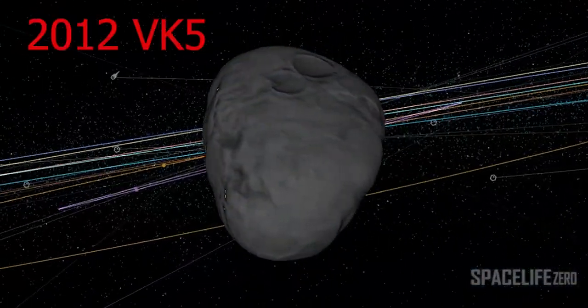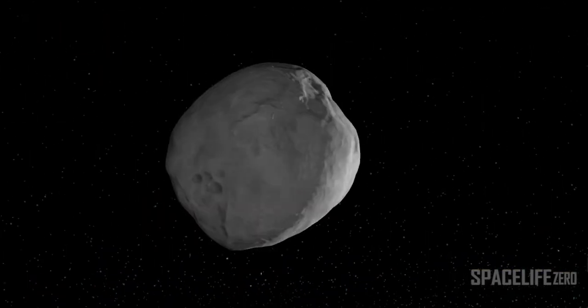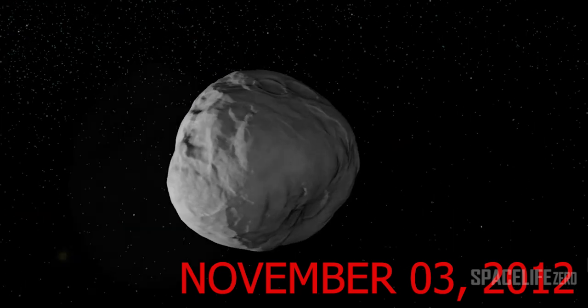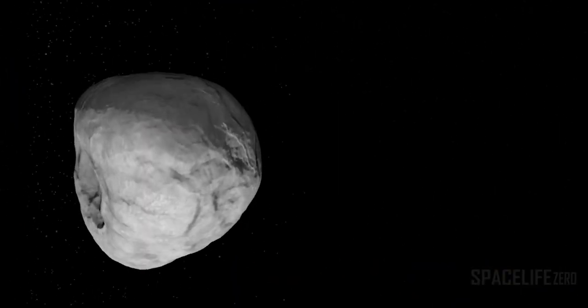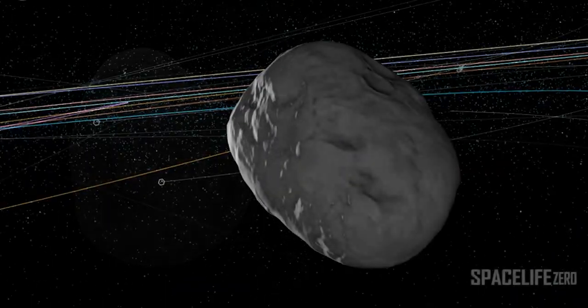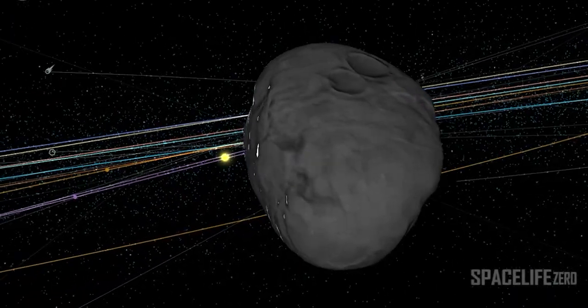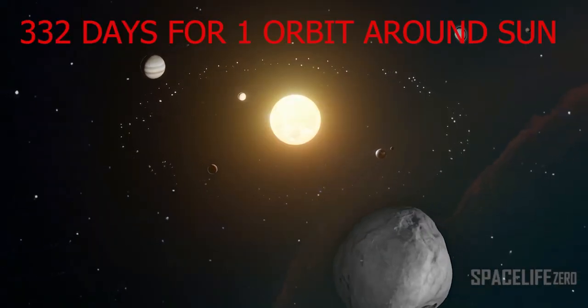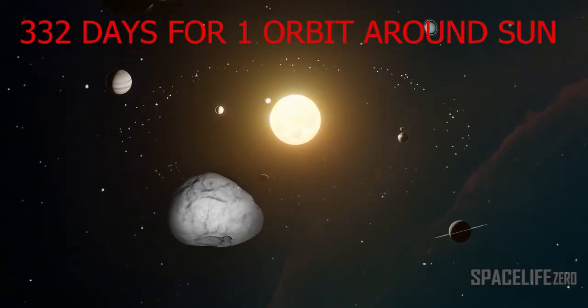Asteroid 2012 VK5. This near-Earth object was detected on November 3, 2012. Its size is estimated in the range from 30 meters to 67 meters. The asteroid 2012 VK5 belongs to the Aden Group. It makes one orbit around the Sun in 332 days.